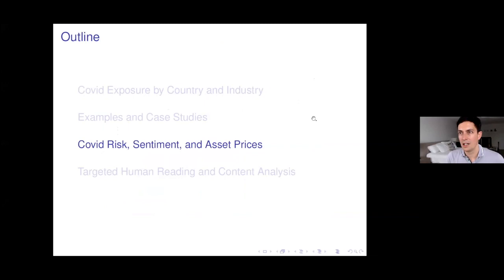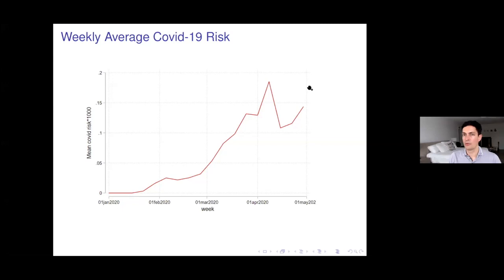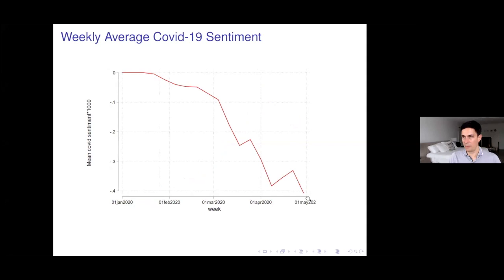Just as we had Brexit risk and Brexit sentiment, we now have COVID risk and COVID sentiment. Weekly average COVID risk increases over time — firms are getting more and more worried about risks associated with COVID. COVID sentiment also trends downward, so there's more and more negative vocabulary used in conjunction with mentions of coronavirus.